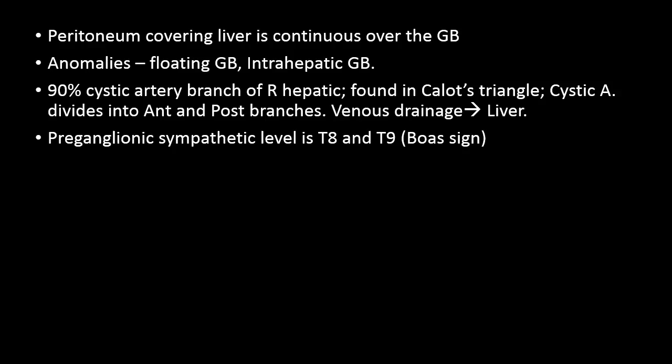The peritoneum that covers the liver is continuous over the gallbladder. Sometimes you can find anomalies like a floating gallbladder having a mesentery of peritoneum, or even an intrahepatic gallbladder which is partially embedded into the liver. When one encounters an intrahepatic gallbladder, it is safer to use the critical view during laparoscopic cholecystectomy. The critical view means you dissect off the peritoneum from the neck of the gallbladder downwards, and also dissect the lateral and medial leaf peritoneum on either side of the gallbladder, so that you can see a free window between the cystic duct and the liver bed, clearly identifying the structures to be divided — the cystic duct and the cystic artery.